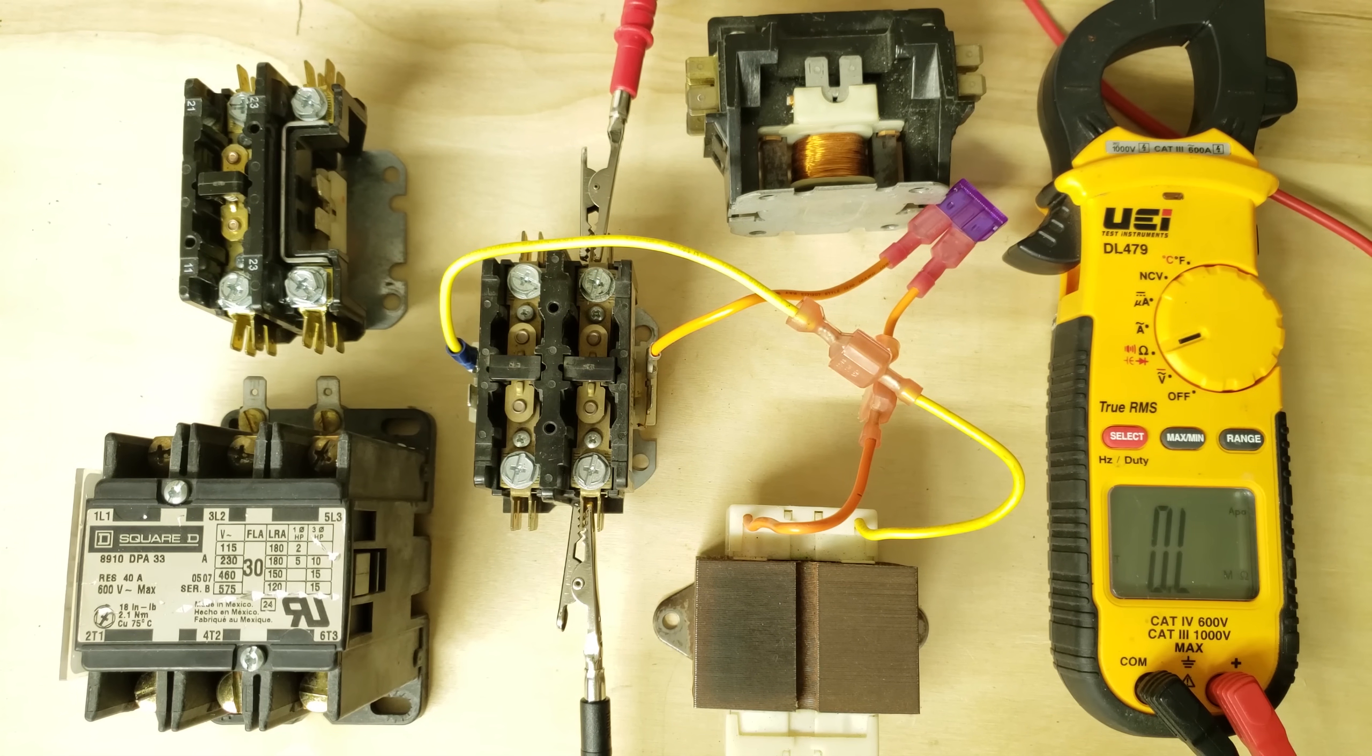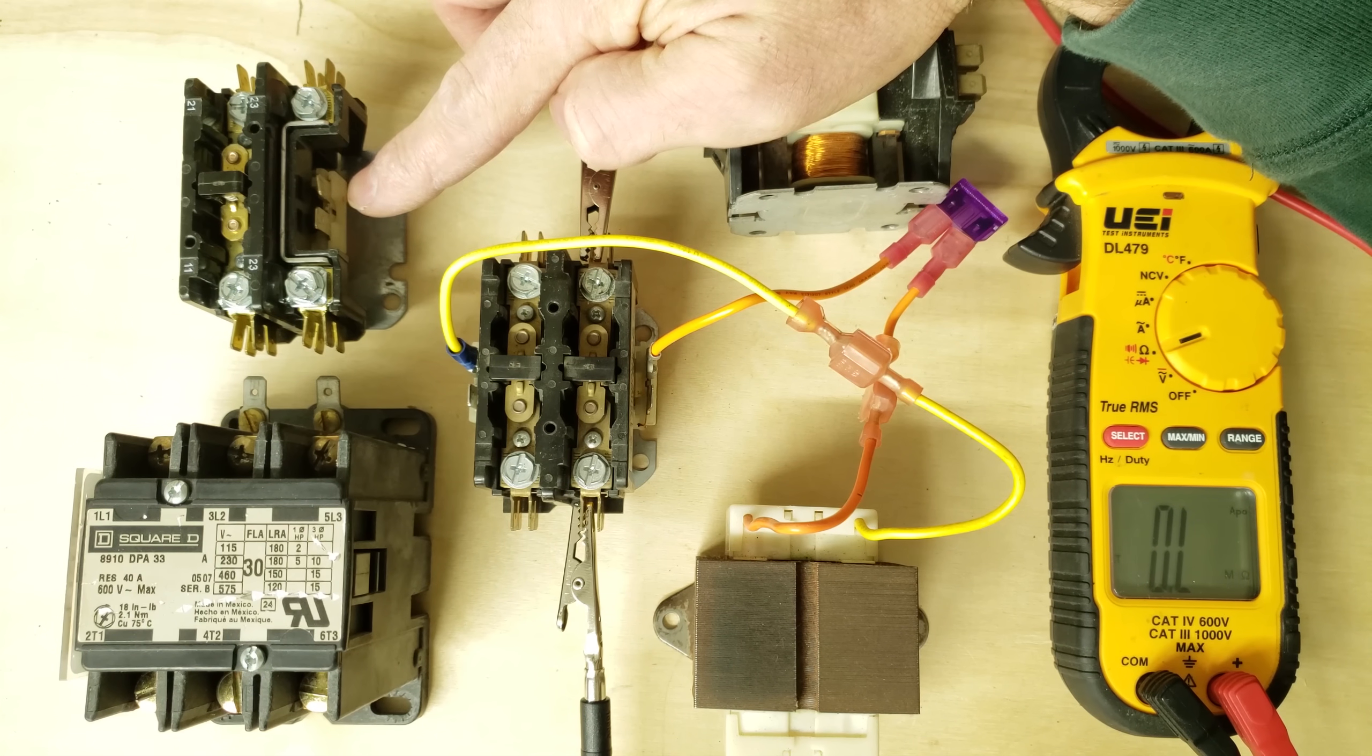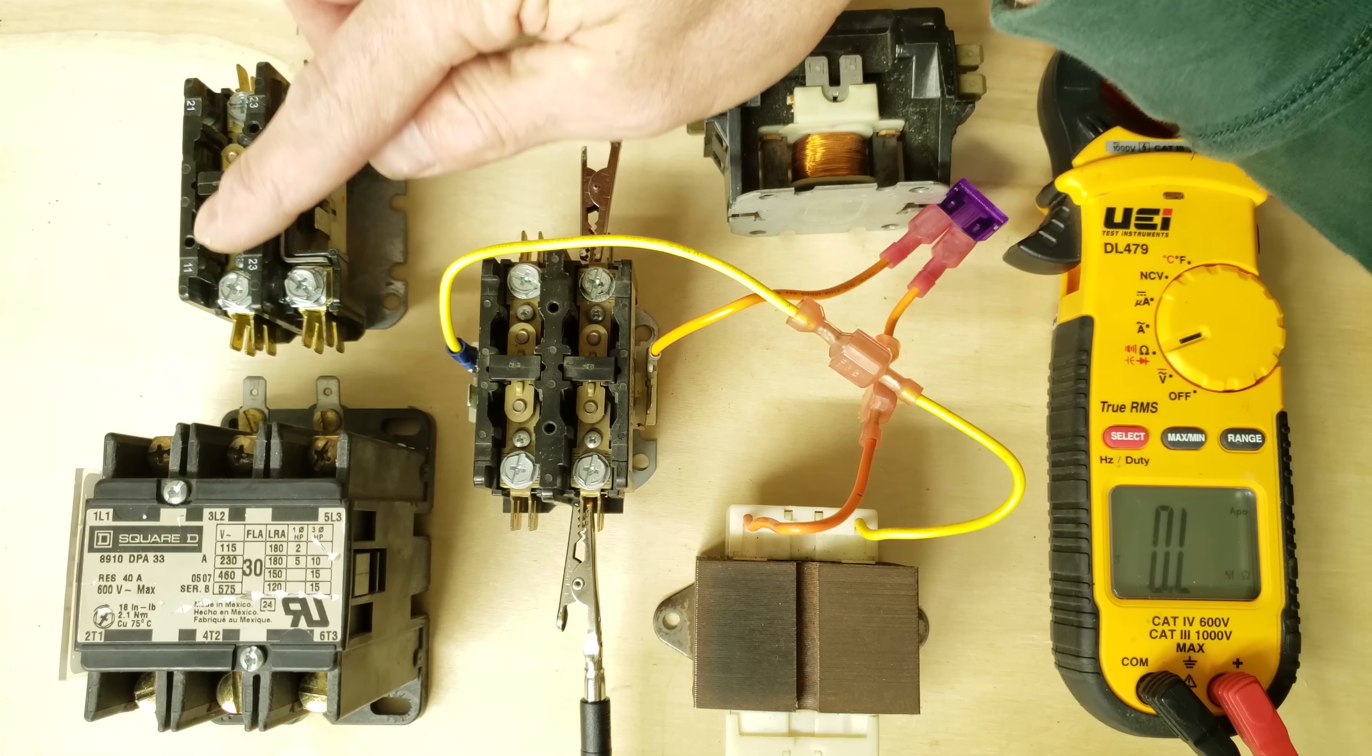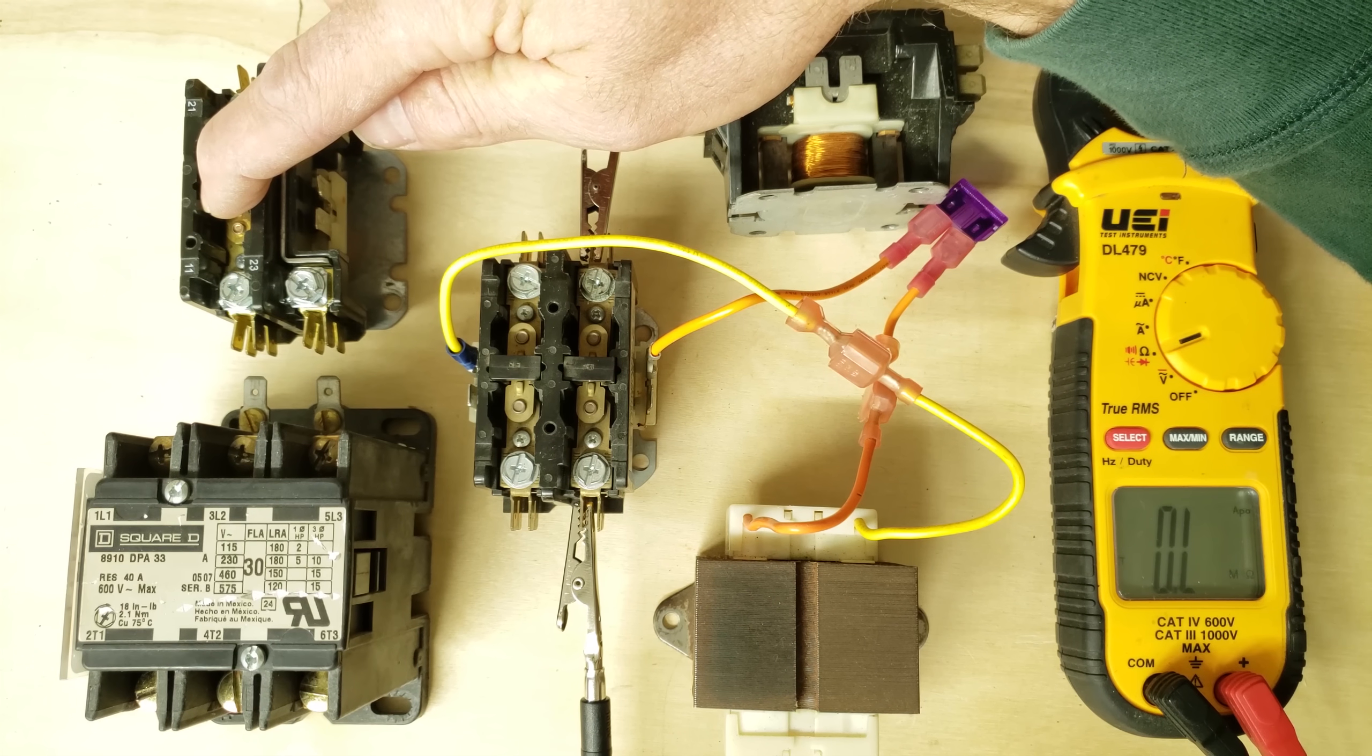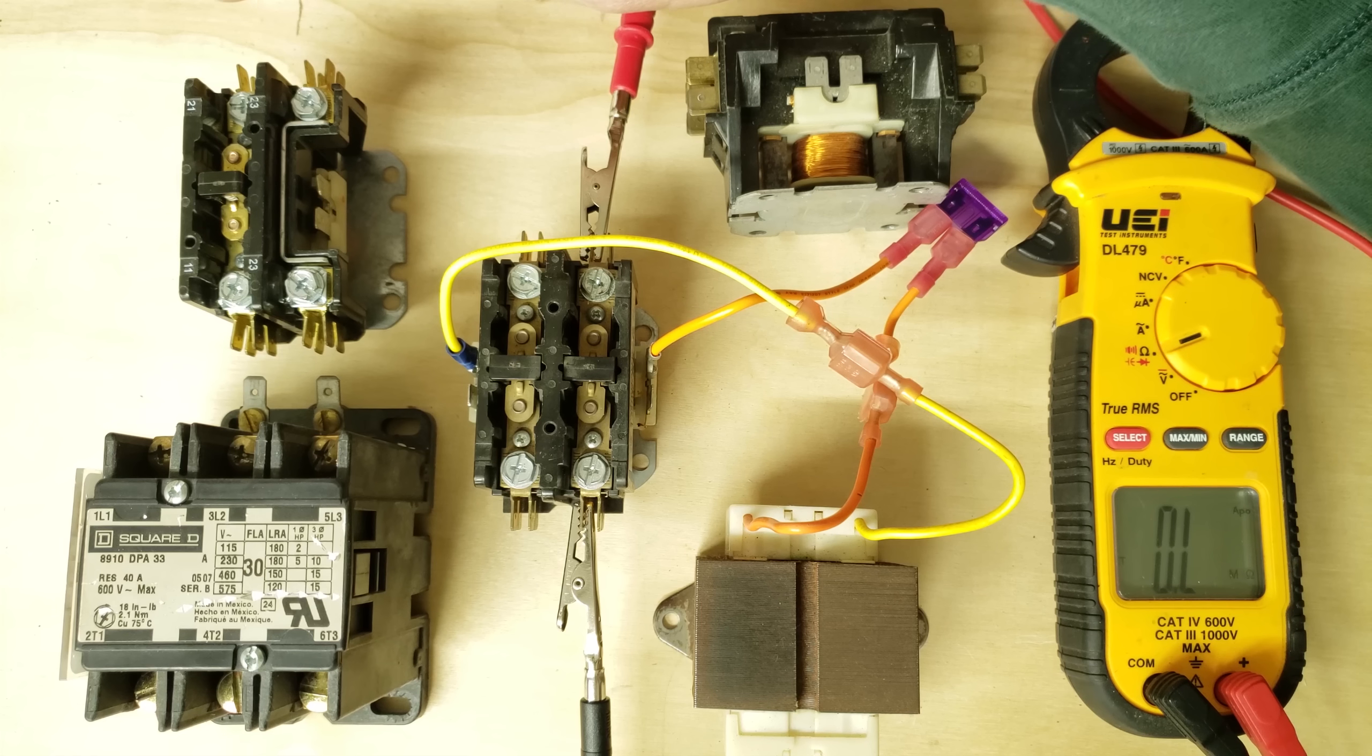The higher the FLA rating the stronger the electrical magnet has to be. So when we apply 24 volts on the side of this, if this one has a high FLA rating it needs to be able to suck that contact down even tighter to hold those contacts nice and tight for the high amperage running across it.